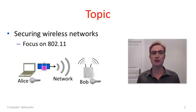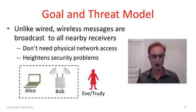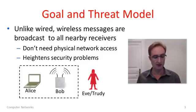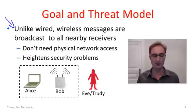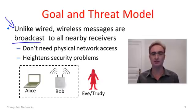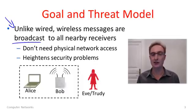We'll also discuss a specific wireless context that should be of interest to many of you. Let's start with the goal and threat model, to be clear about what kind of security we are trying to provide. The key difference between wired networks and wireless networks is that wireless messages are broadcast to all nearby receivers. This is very different than a wired setting — you don't need physical access to the network in the same way, and it heightens security problems.